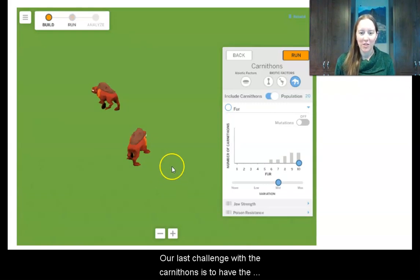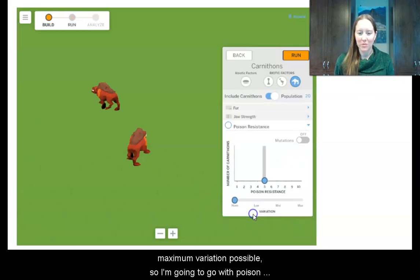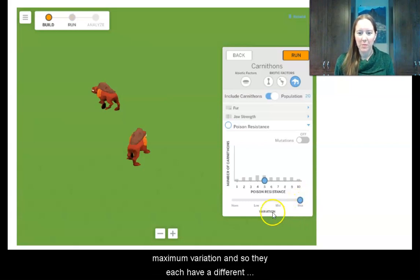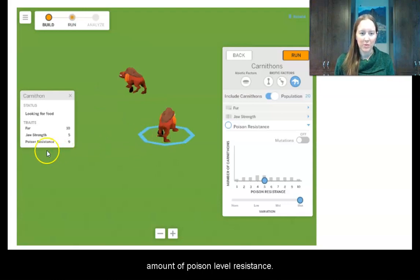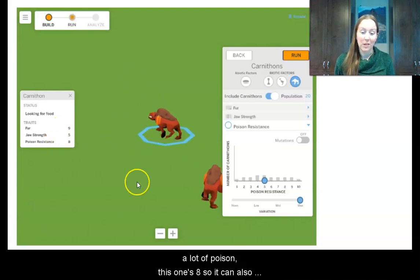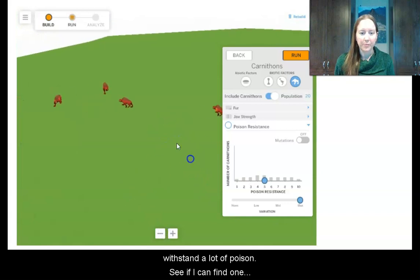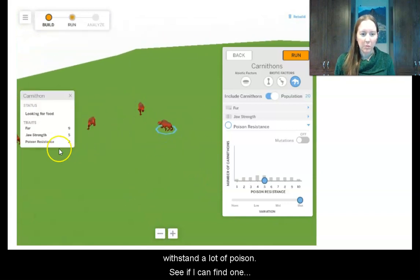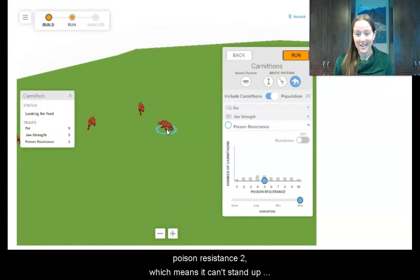And our last challenge with the carnathons is to have the maximum variation possible. So I'm going to go with poison resistance and I'm going to go with the maximum variation. And so they each have a different amount of poison level resistance. So this one's a level nine, which means that it can withstand a lot of poison. This one's eight, so it can also withstand a lot of poison. Poison resistance two, which means that it can't stand up to much of the ostrilope poison.